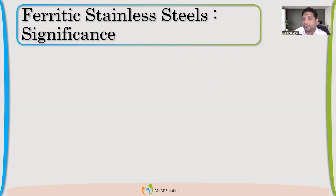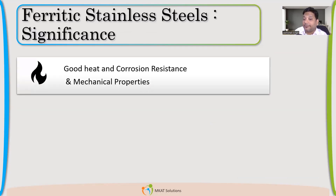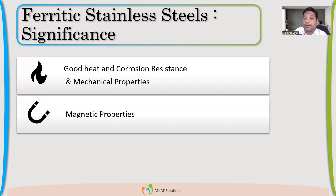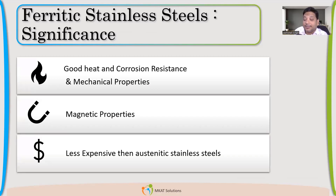In terms of significance, ferritic stainless steels have very good heat resistance, good mechanical properties, and magnetic properties — which is one way to differentiate them from austenitic stainless steel. They are also less expensive than austenitic, and at that lower cost you still get good heat resistance and corrosion properties.